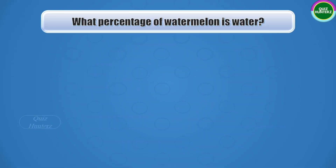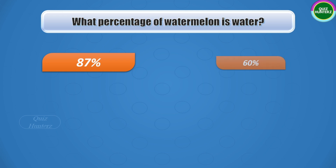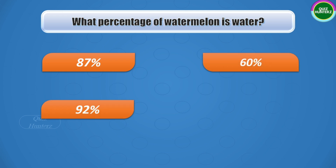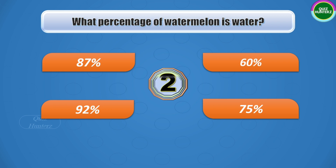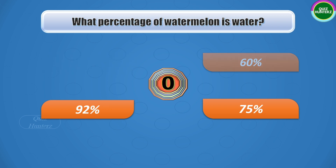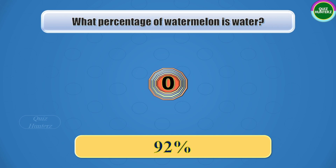Question number three: what percentage of watermelon is water? Options are 87%, 60%, 92%, and 75%. The time starts now. And the correct answer is 92 percent.